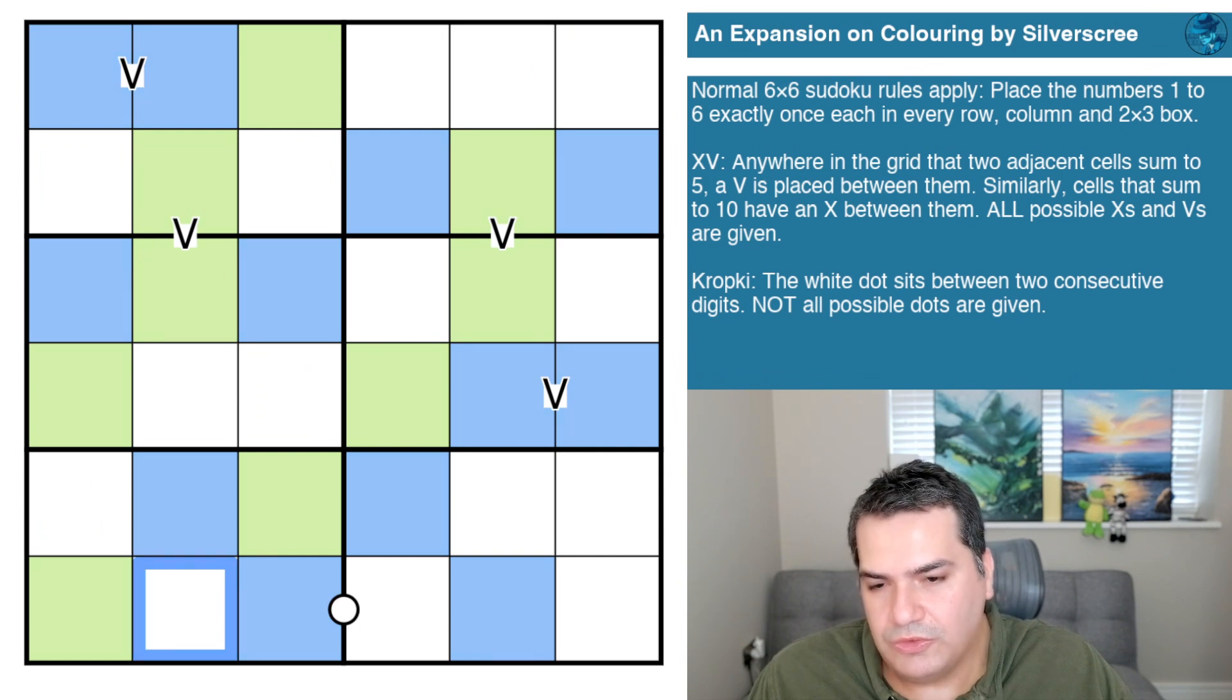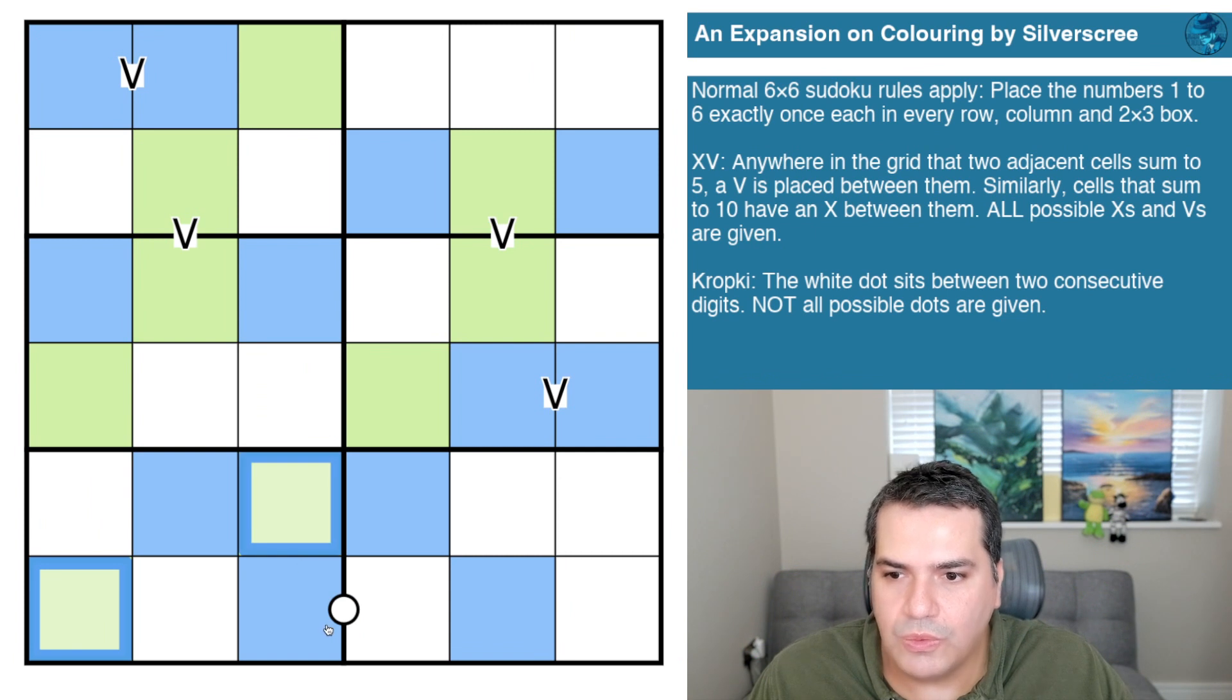We've run out of blues in this column, we need a second one in here. Can't be adjacent, no V's, so that's the blue. I imagine this will disambiguate it, because if that was a blue we'd have a V. That's the blue, that's the blue, this is not anything.